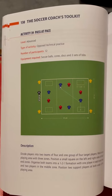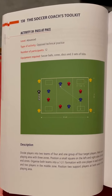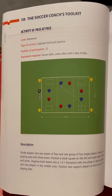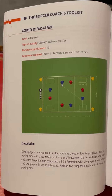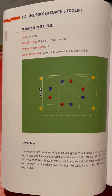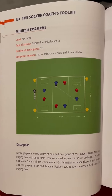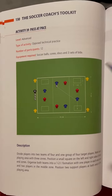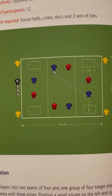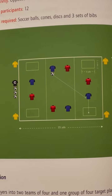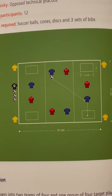You can see three teams of four: four blues, four reds, four yellows. The yellow players are support players to either end. There are three zones — 2v2 in the middle, 1v1 in the end zones — and there are four scoring boxes.